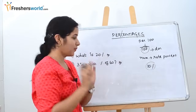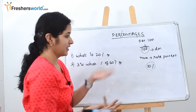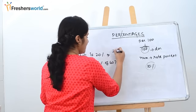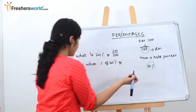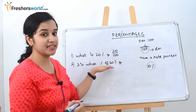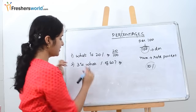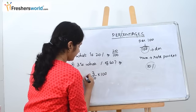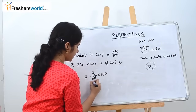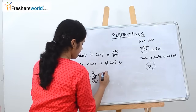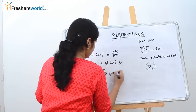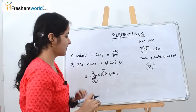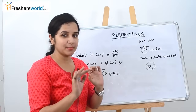Let's solve a couple of small problems. What is 20%? As we just discussed, 20% is nothing but 20/100. Next: 3 is what percent of 60? So it is 3/60 × 100, which is nothing but 5%. So 3 is 5% of 60. This is the basic concept in percentage — you should understand why we are dividing by 100.